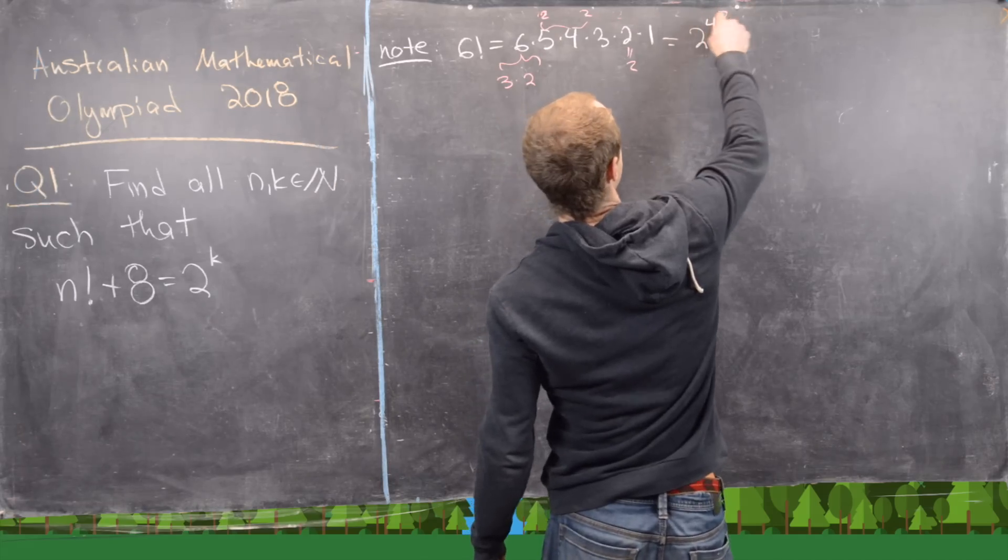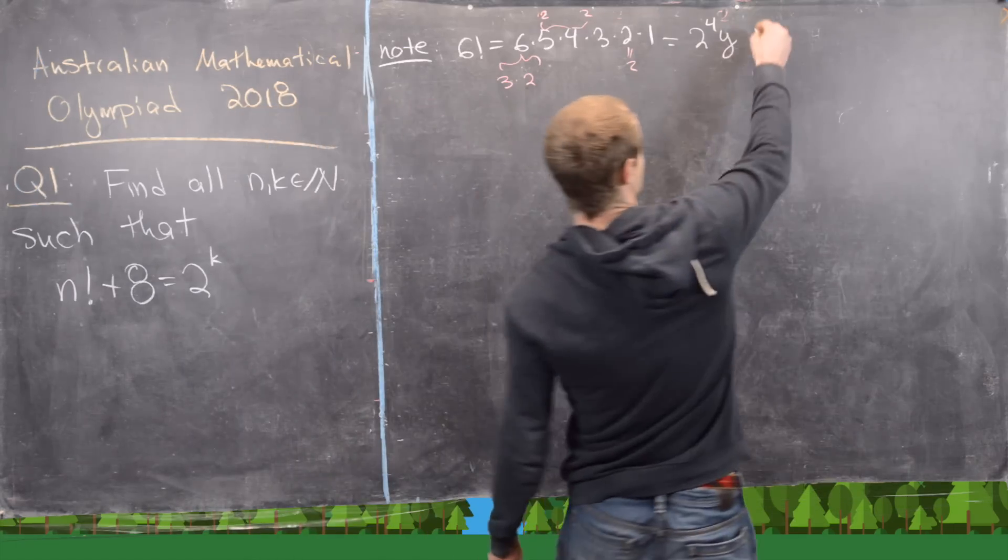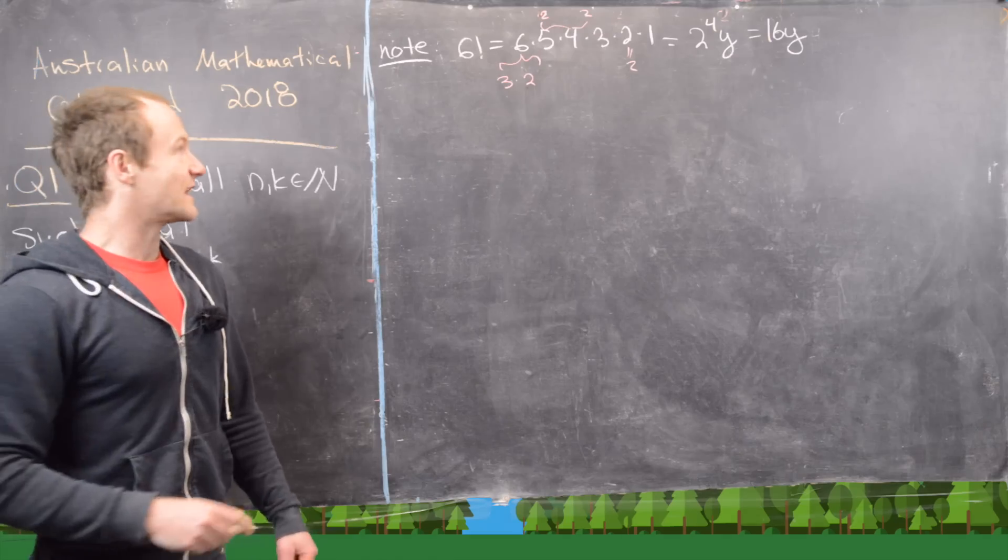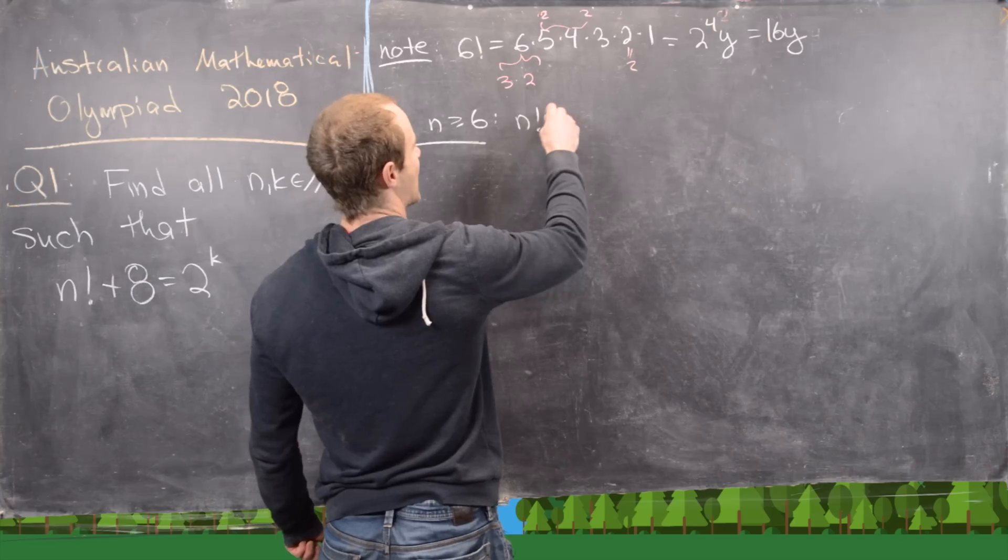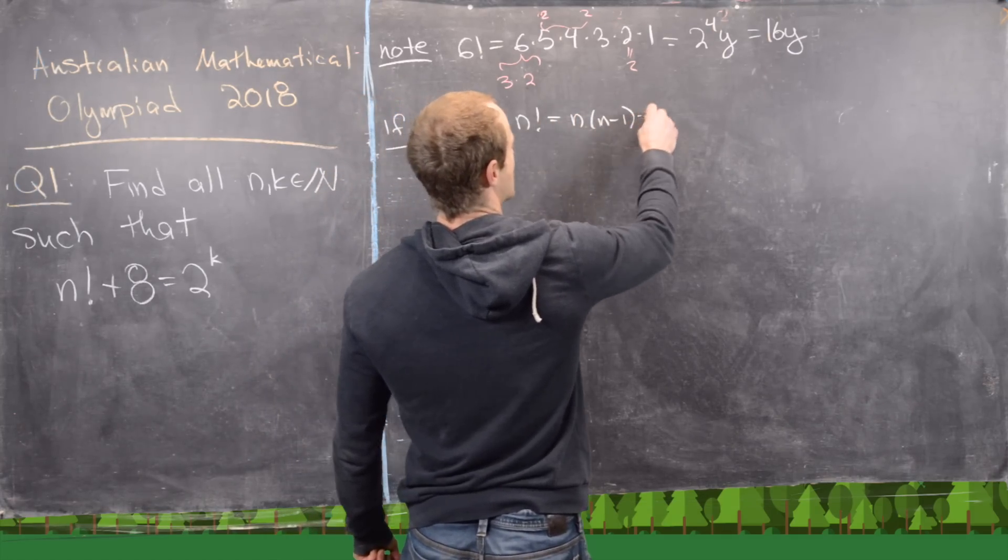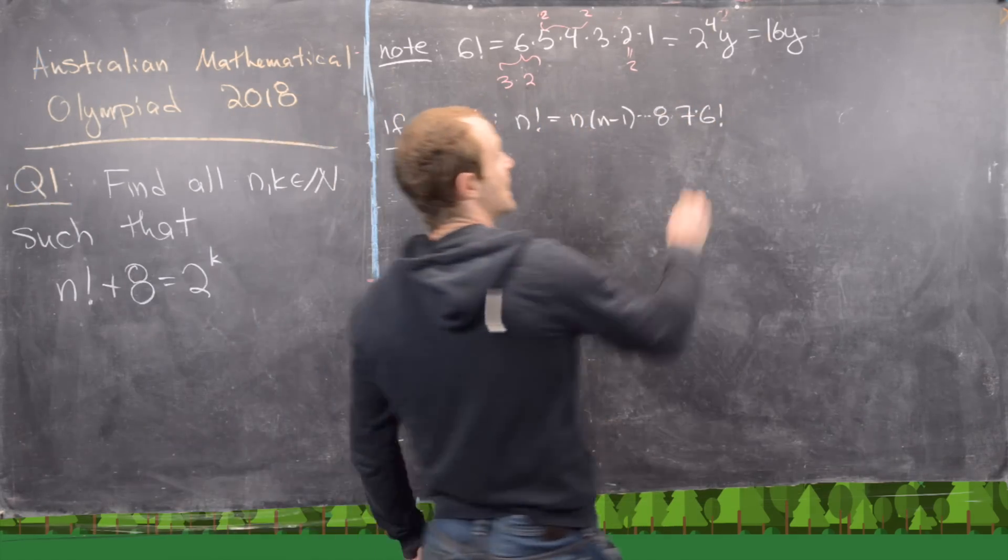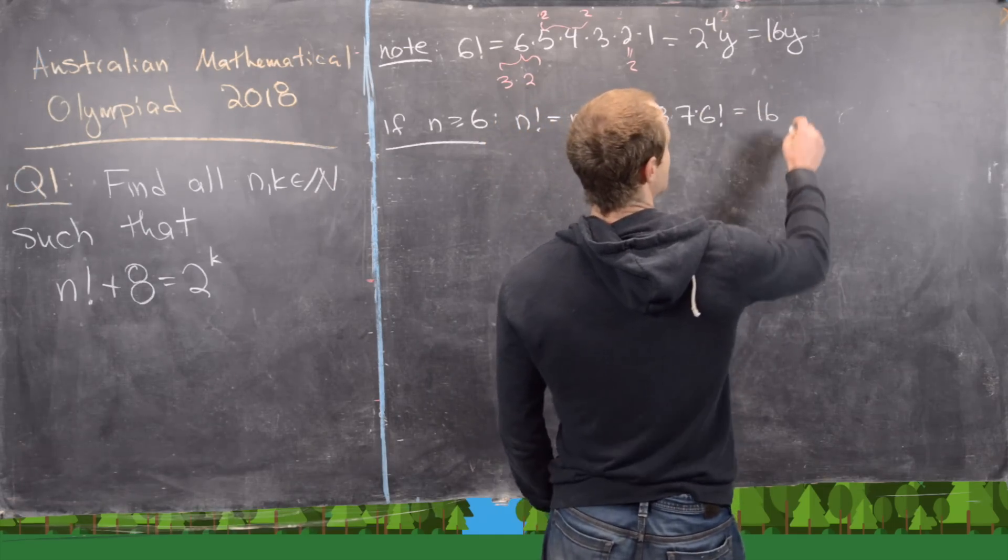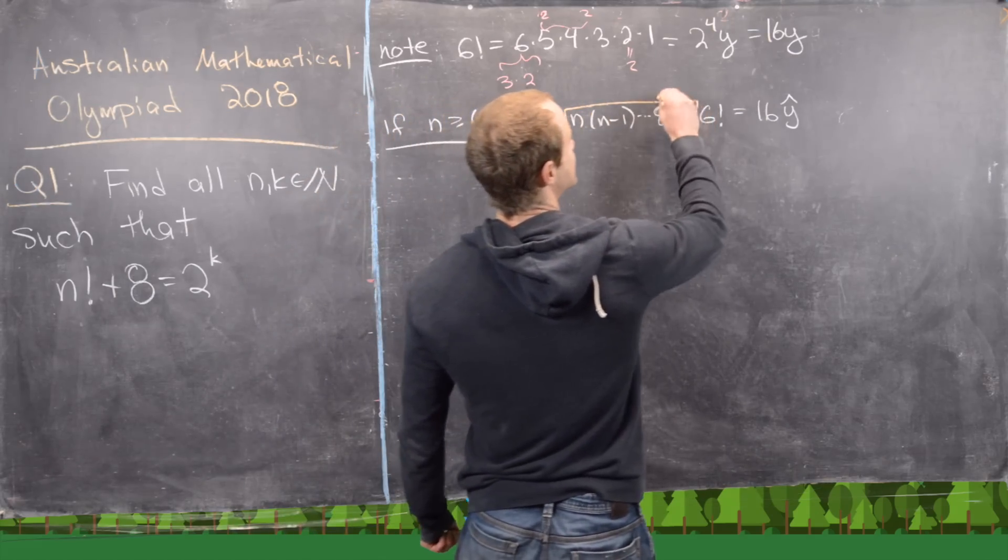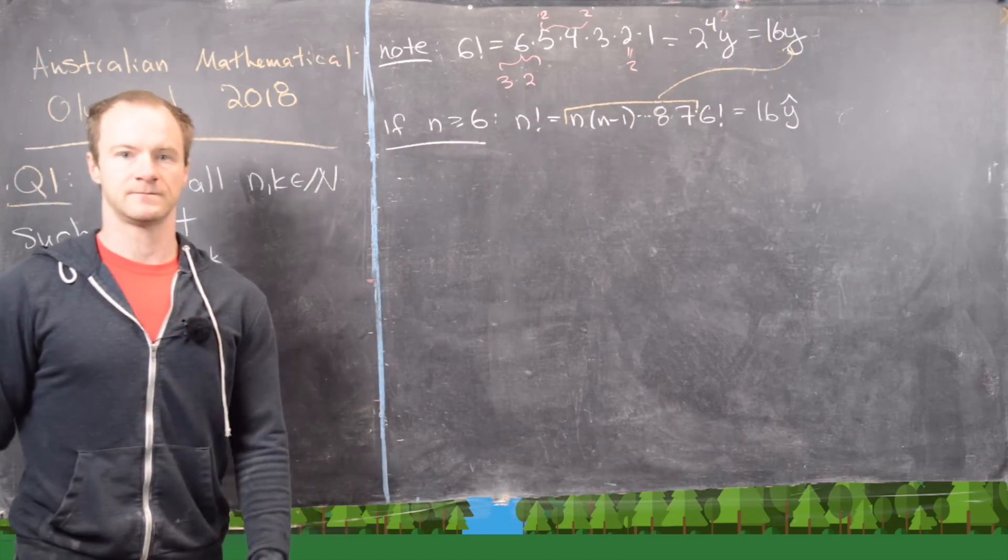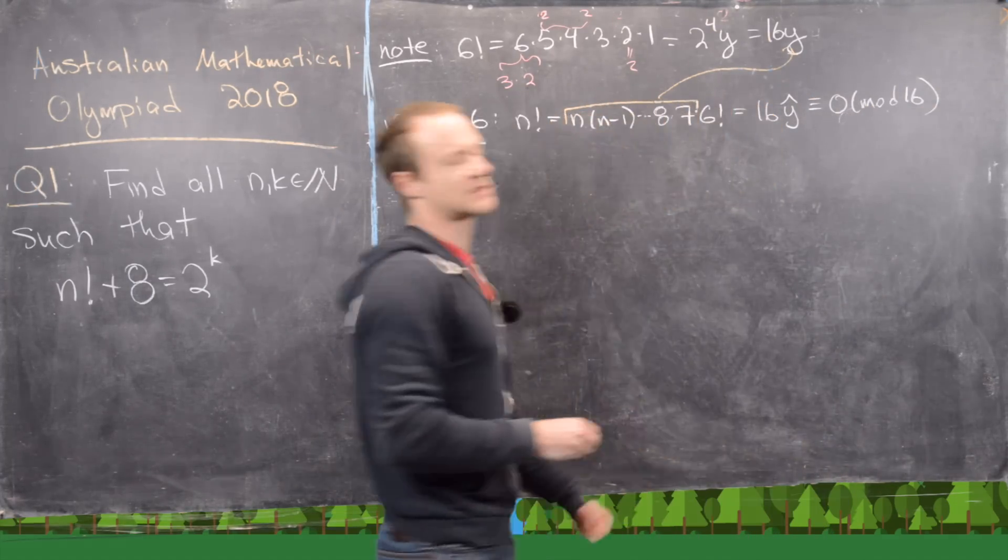so we can write this as 2 to the 4 times some number y, where y encompasses everything that's left over. But notice that's just equal to 16 times y. Now, the next thing to notice is that if n is bigger than or equal to 6, then we can write n factorial as n times n minus 1 all the way down to 8 times 7 times 6 factorial. But that's going to be equal to 16 times some number y hat, where we got that number y hat from taking all of these and putting them into this number y.